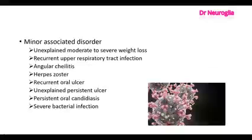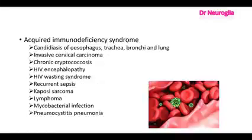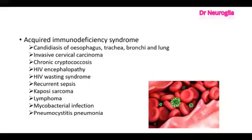The minor associated disorders include unexplained moderate to severe weight loss, recurrent upper respiratory tract infection, angular cheilitis, herpes zoster, recurrent oral ulcer, unexplained persistent ulcer, persistent oral candidiasis, and severe bacterial infection. The acquired immunodeficiency syndrome features are candidiasis of the esophagus, trachea, bronchi and lung, invasive cervical carcinoma, chronic cryptococcosis, HIV encephalopathy, HIV wasting syndrome, recurrent sepsis, Kaposi sarcoma, lymphoma, mycobacterial infection, and Pneumocystis pneumonia.